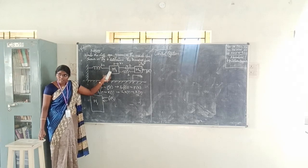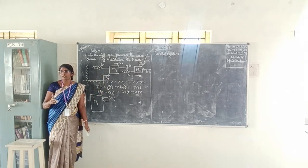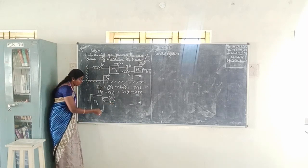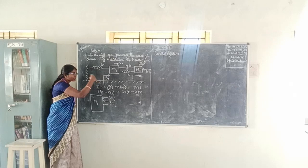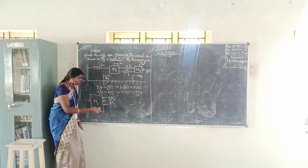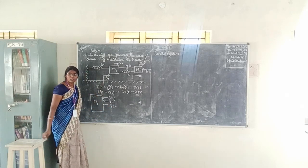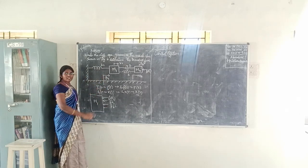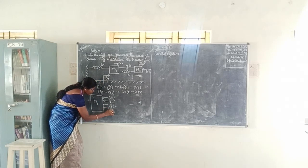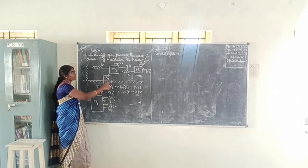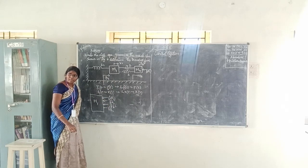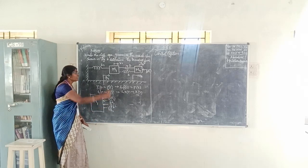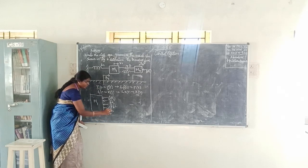B1 is the dashpot connected to mass M1. Next, dashpot B is common to both M1 and M2, so we write it as B(x1 - x2). Then for the springs: spring K1 is connected to M1, and spring K is common to both M1 and M2, written as K(x1 - x2).